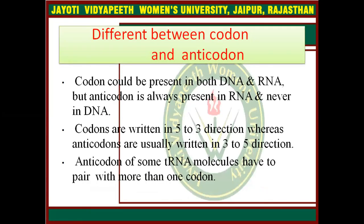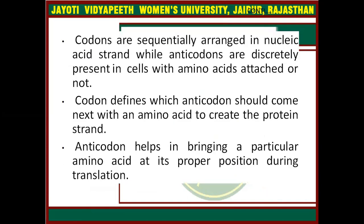Difference between codon and anticodon: A codon can be present in both DNA and RNA, but an anticodon is always present in RNA and never in DNA. Codons are written in the 5' to 3' direction whereas anticodons are written in the 3' to 5' direction. Anticodons of some tRNA molecules can pair with more than one codon. Codons are sequentially arranged in the nucleic acid strand while anticodons are discretely present in the cells with or without amino acids attached.